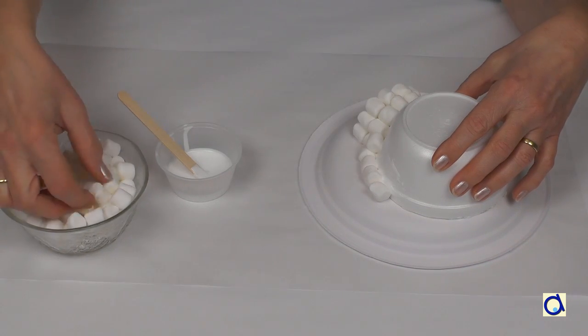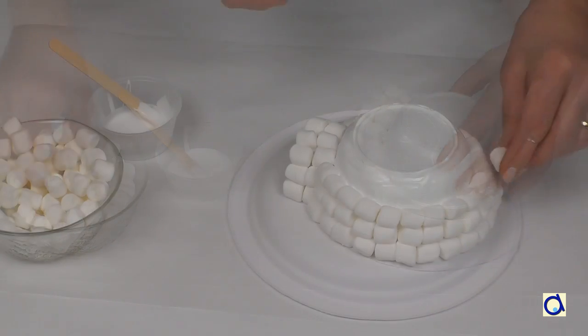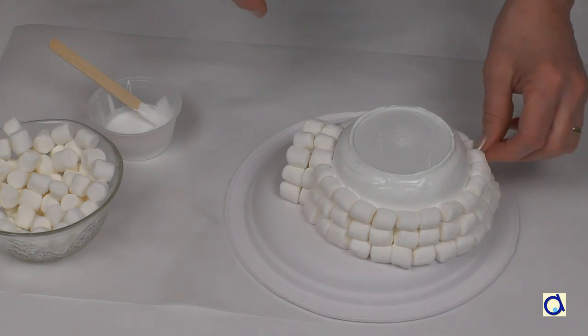Snow is used to make igloos because the air pockets trapped in the snow insulate the igloo from the cold outside.